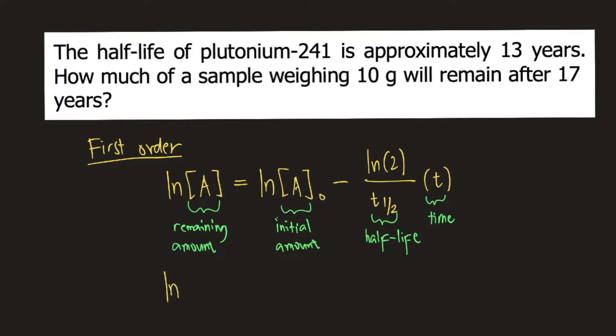If we read the problem, it's asking us for the remaining amount. So ln(A) = ln(10 grams) - (ln2/13 years)(17 years).